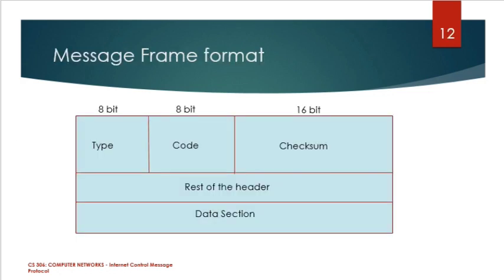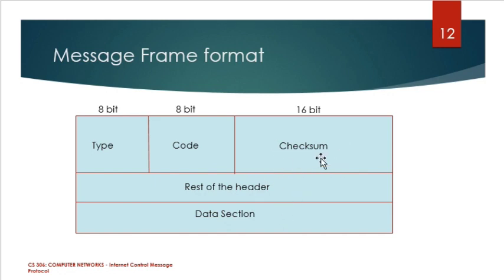This is the frame format of ICMP protocol. The fields are: type, which defines the type of message; code, which gives the reason for the particular message type; checksum, used for error calculation; rest of the header, which depends on different message types; and data section, which carries information for finding the original packet.